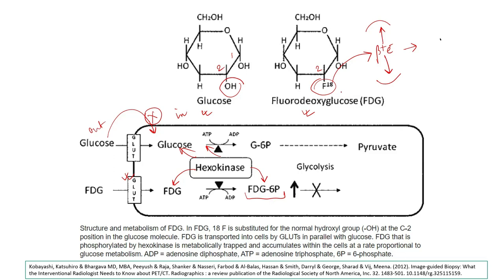The rate of FDG uptake depends on the metabolic demand of the cell. A normal cell takes up a basal amount of glucose, whereas a tumorous cell takes up more glucose because it is highly glycolytic in nature. So based on metabolic demand, each cell takes up glucose accordingly.